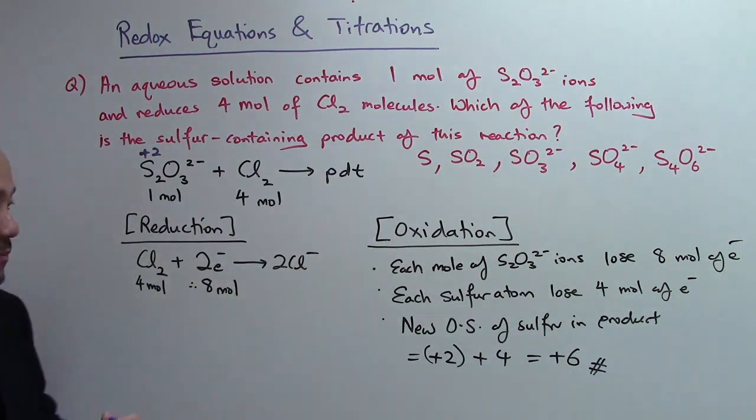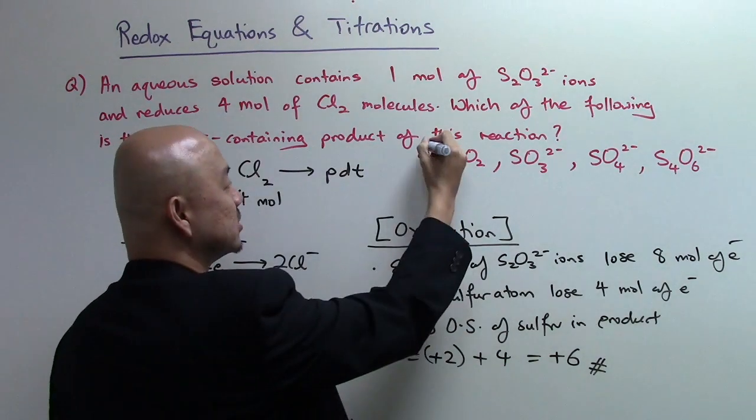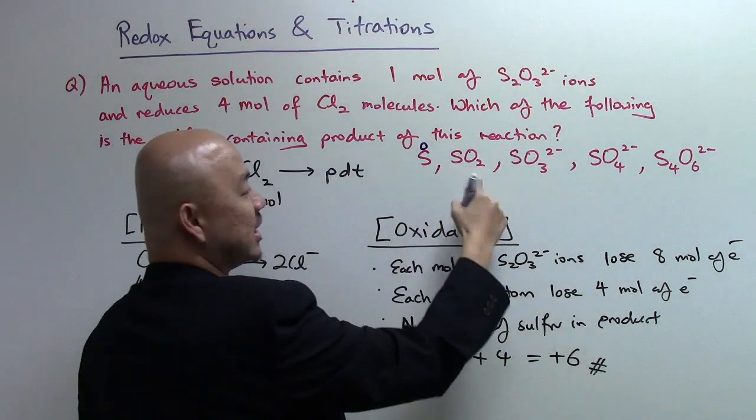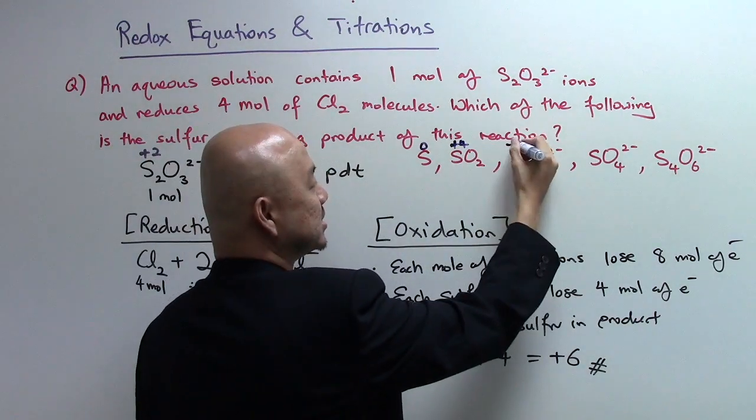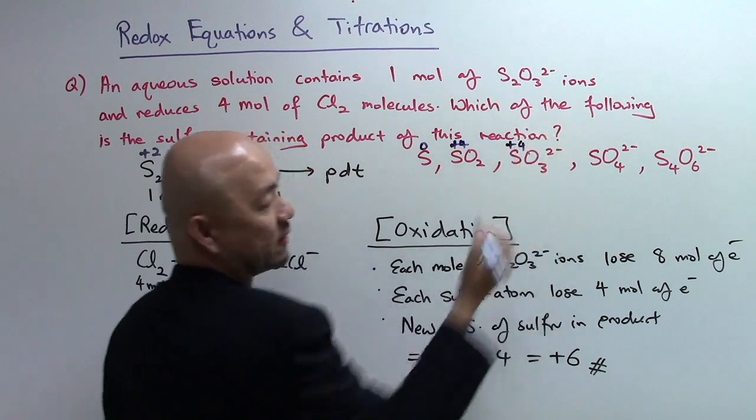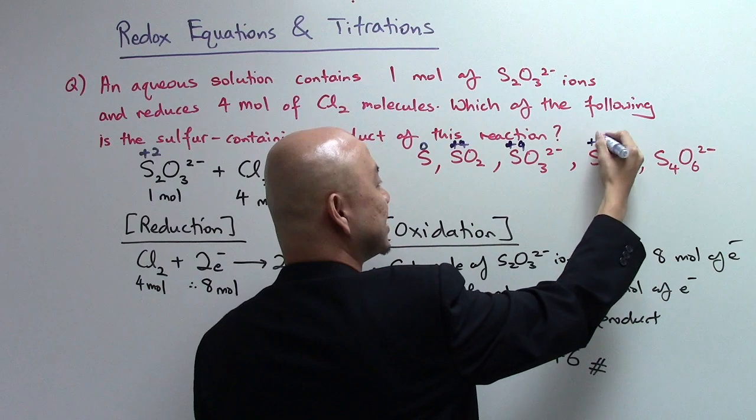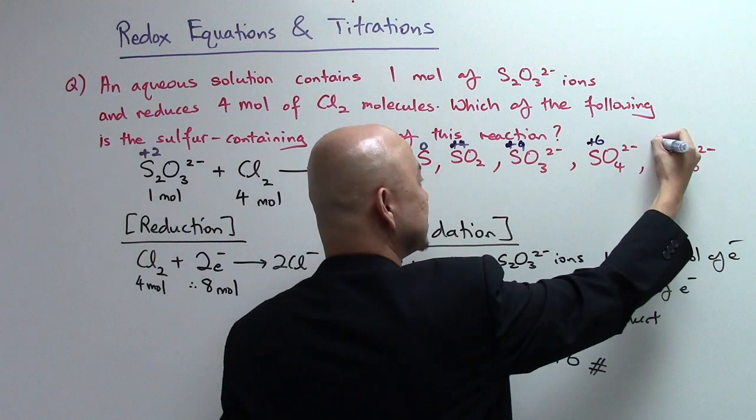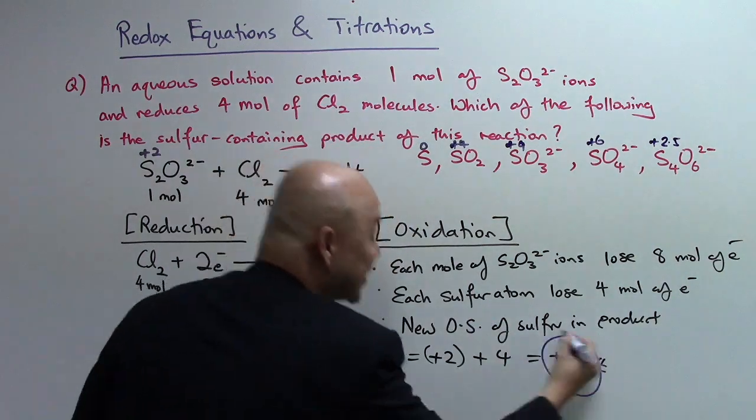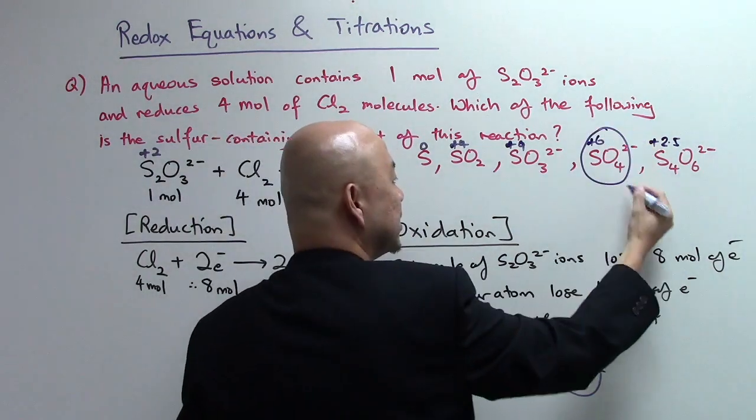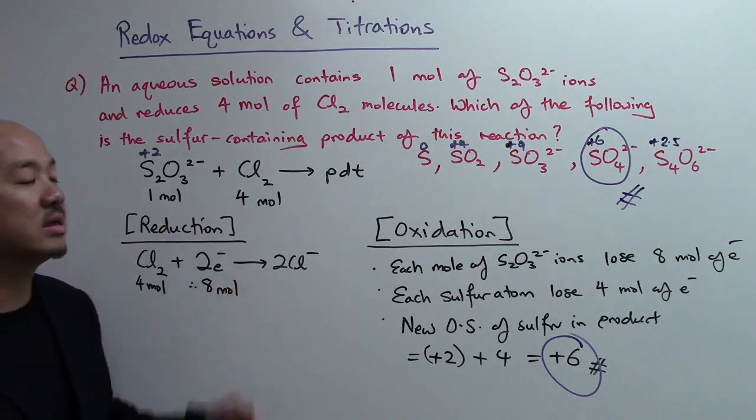Now to solve the question, we have to get back to the five options. Let's take a look at their oxidation states. Sulfur element is OS zero. In SO2 is plus four. In SO32- is still plus four. And in sulfate, SO42-, that's plus six. For S4O62- is plus two point five. So to match plus six, the answer will be your sulfate, SO42-, in this question.